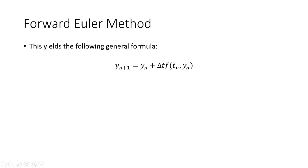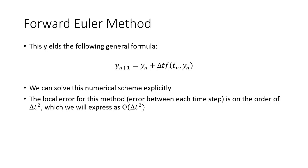What that means is if we know t_n and y_n, then we can solve directly for our next solution, point y_{n+1}. And if we were to derive what the local error for this method is, basically the error between each approximated step, we're going to be on the order of Δt squared, which we can express as O(Δt²).